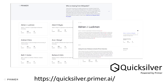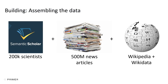So the first question is, how did we do this? We started, as any good AI project does, with a huge pile of data. Our friends at the Allen Institute for AI gave us a massive list of scientists — names, affiliations, papers. We leveraged our huge corpus of English language news articles, and we also used Wikipedia and its sister project Wikidata, which has structured data that goes alongside it.